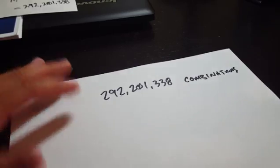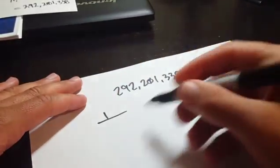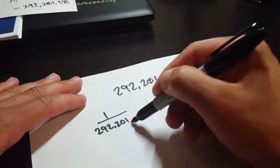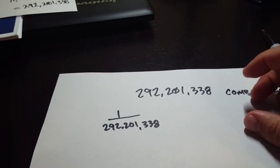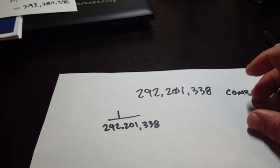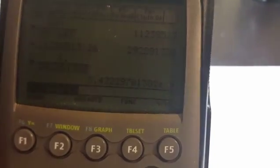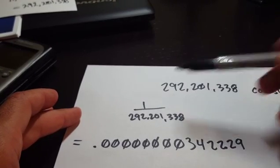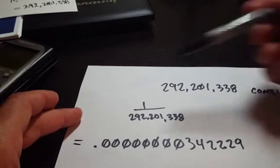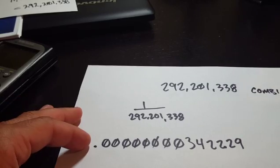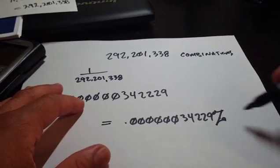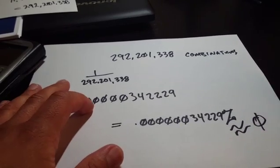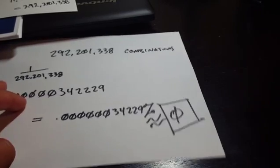To get your actual odds, you write it as 1 over 292,201,338. On the calculator, that's approximately 3.42 × 10⁻⁹ — in decimal form, that's 0.000000000342. To get a percentage, you multiply by 100, and this number is approximately zero. So your odds of winning Powerball are essentially 0.00%.